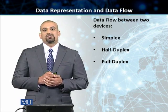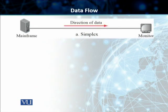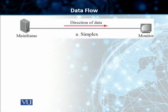The first mode is the simplex mode. As you can see in the figure, the direction of data is unidirectional — only in one single direction. Think of it as a one-way road where only one of the two devices can send data and the other one listens. For example, the mainframe sends data to the monitor; the monitor never sends data back. A keyboard is another example — keyboards only send data and never receive it, so the direction from keyboard to monitor is simplex.